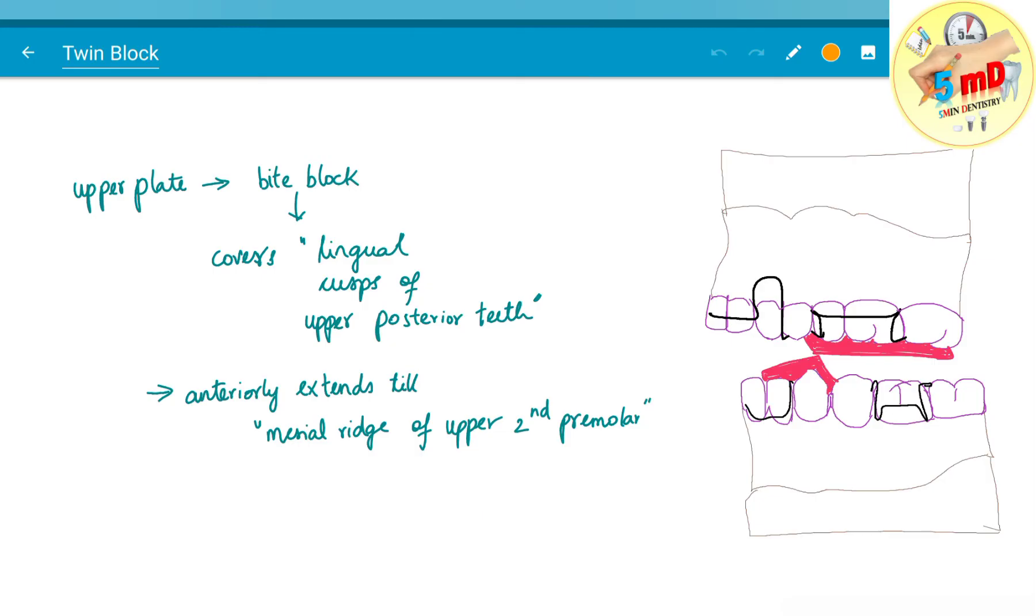The upper plate bite block covers the lingual cusps of the upper posterior teeth as you could see here and it anteriorly extends till the mesial ridge of the upper second molar.